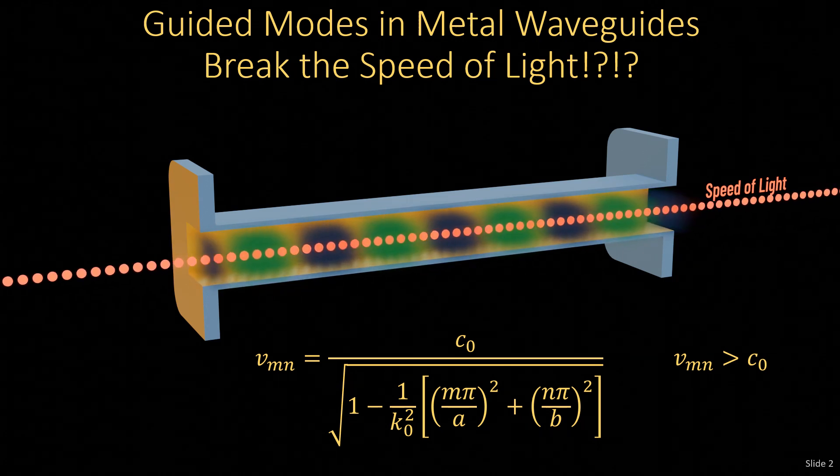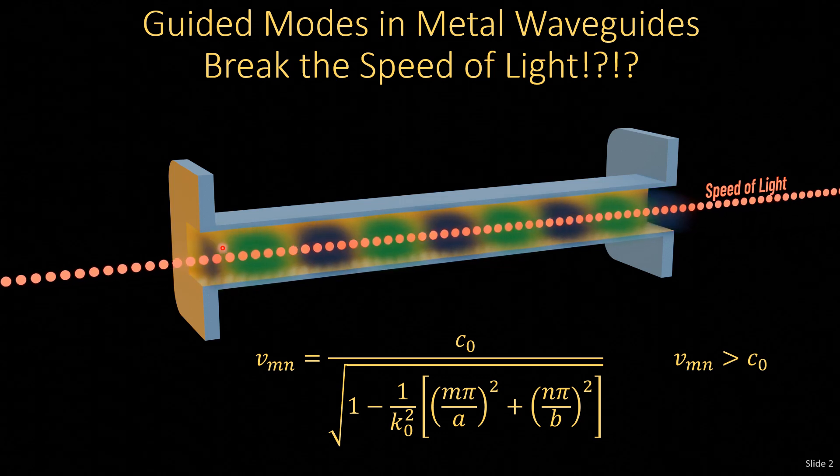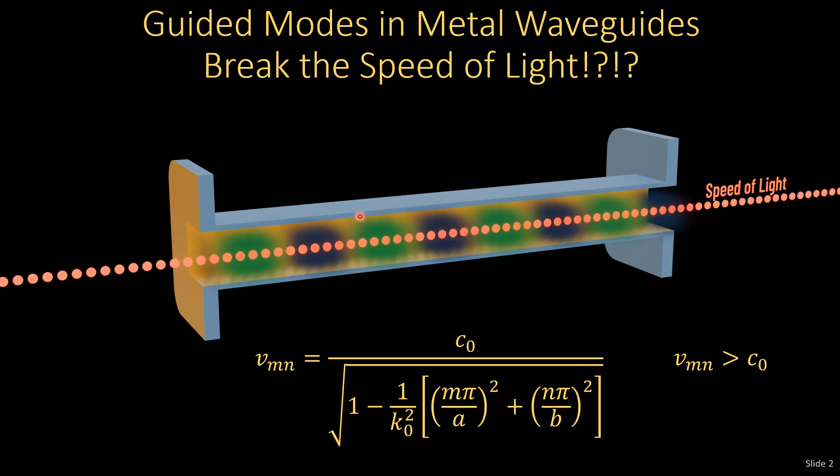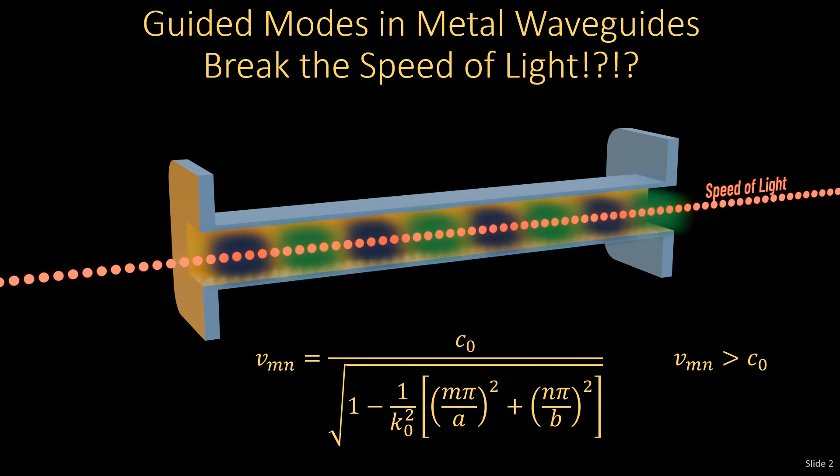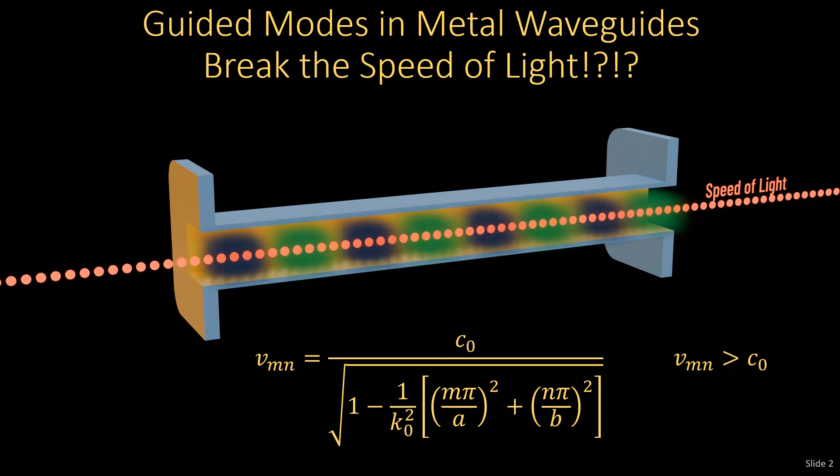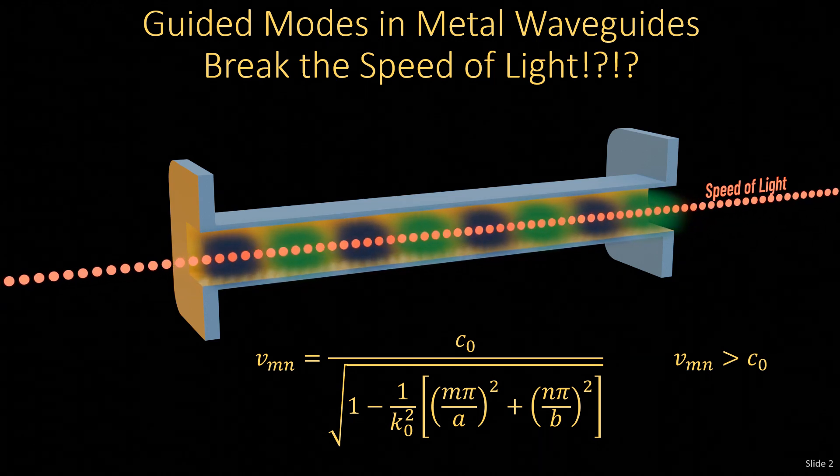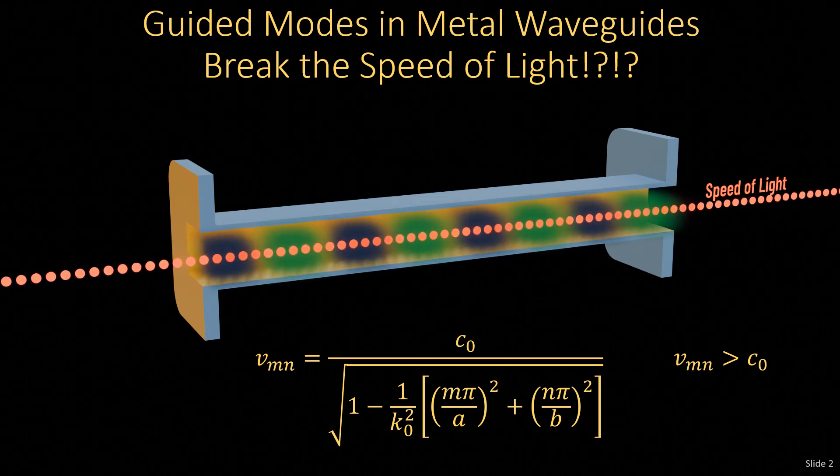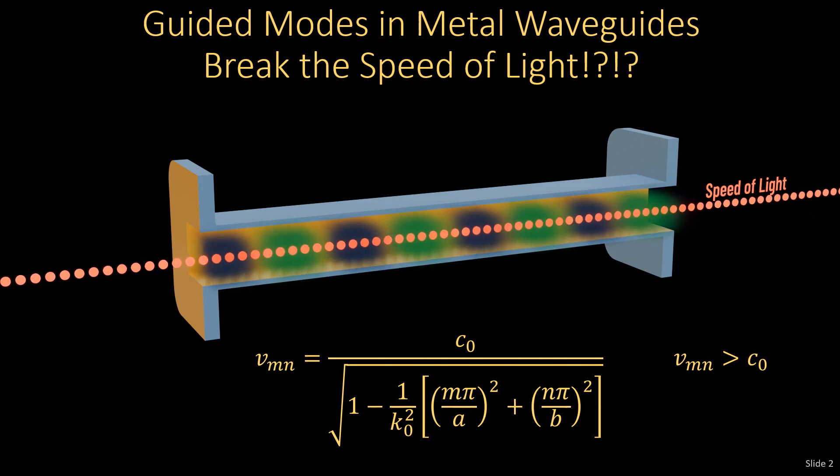Now, built into this equation is an assumption that we have an air-filled waveguide here. So, well, this seemed unusual, but there it was, we derived it. And the velocity of these modes are actually faster than the speed of light. Or is it?